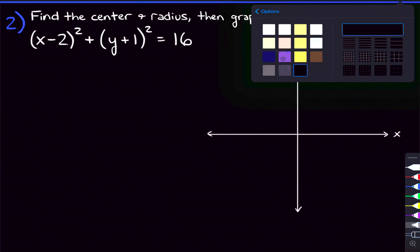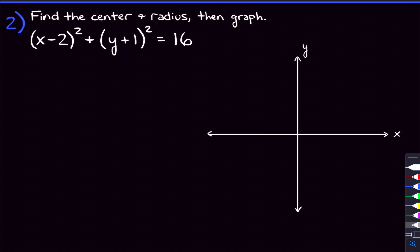Now we're moving on to problem two: find the center and the radius of this circle, then graph it. This one is a little different from the last because it has a negative 2 on the x and a plus 1 on the y. Those two numbers are going to move the center of our circle so it's no longer at the origin.